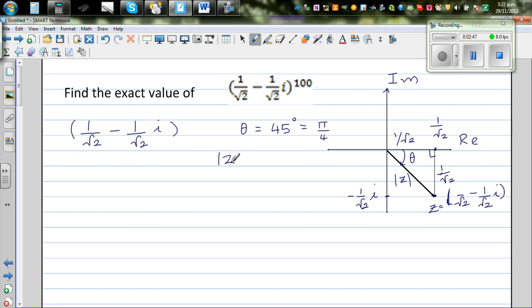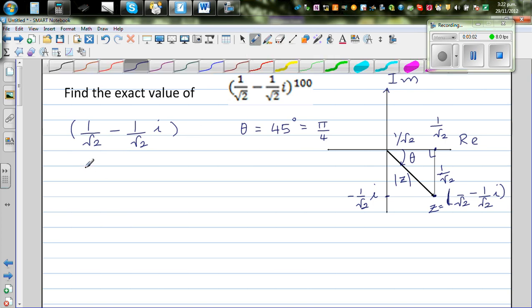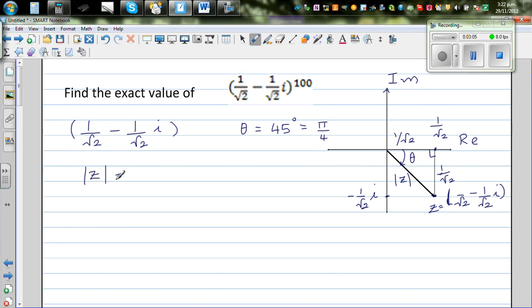And modulus of z, using Pythagorean theorem, or the length of this vector, would be square root of 1 over root 2 squared plus 1 over root 2 squared, which is square root of half plus half. If you square 1 over root 2, you get a half, plus half, which is square root of 1, which is 1.